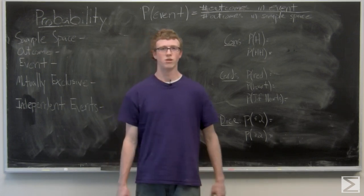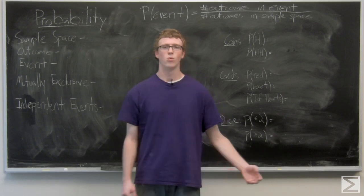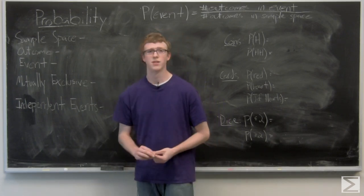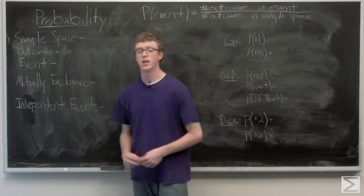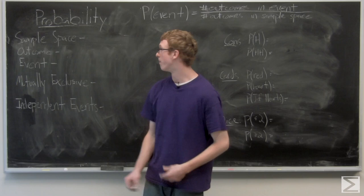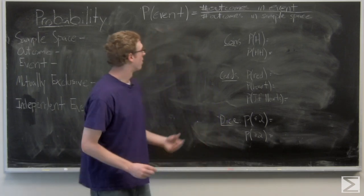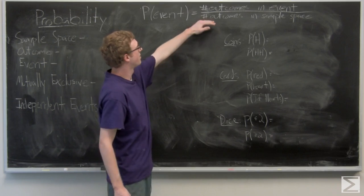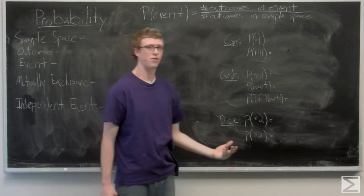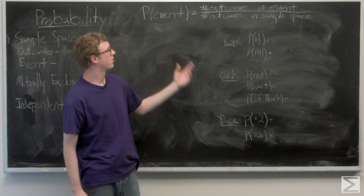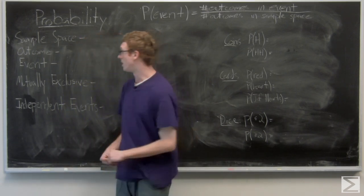So without further ado, let's take a look at probability. Now what probability is, it's a measure of predictability essentially. It's the way to predict whether or not an event will occur based on how likely it is that there are a certain number of outcomes in an event and a certain number of outcomes in the total sample space. So we need to take a look at exactly what event and sample space means.